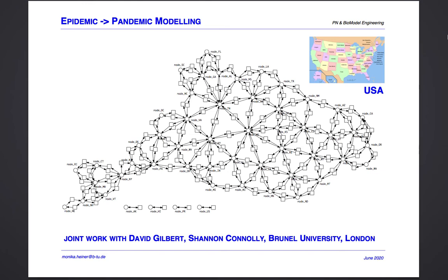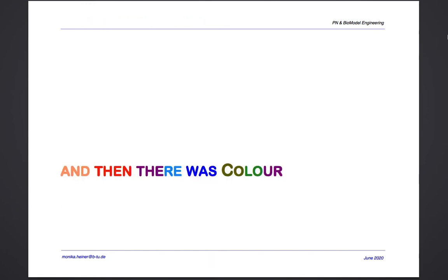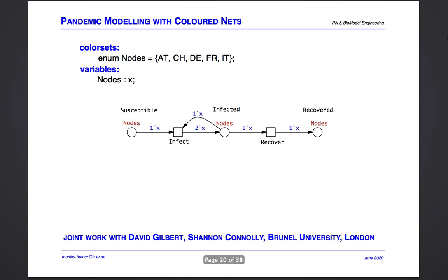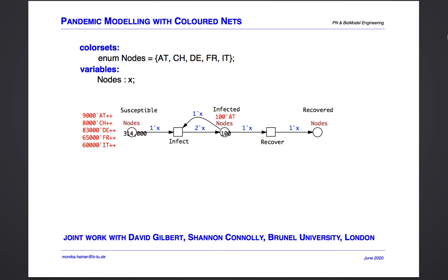So what we do instead: we take our basic model and we color it. Here you go — first we introduce a color set comprising all locations we want to consider, we add a variable x, and we specify the initial marking. Now what we have is epidemics evolving in every location, but so far independently.